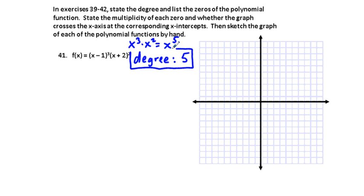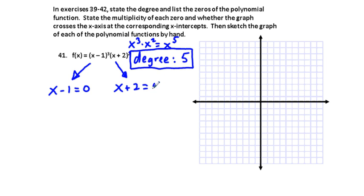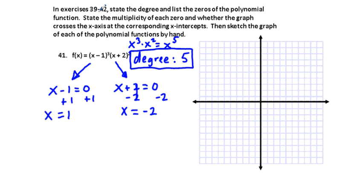Next, we list the zeros. For the factor quantity x minus 1 cubed, we set x minus 1 equal to 0, giving x equals 1. For the other factor, we set x plus 2 equal to 0 and subtract 2 from both sides, giving x equals negative 2. You can just look at these factors and see the zeros mentally.